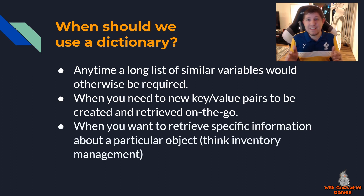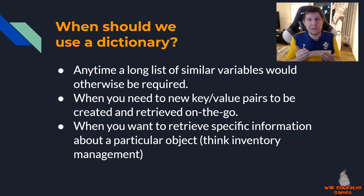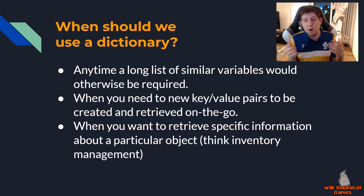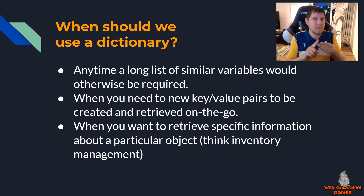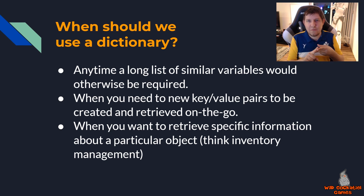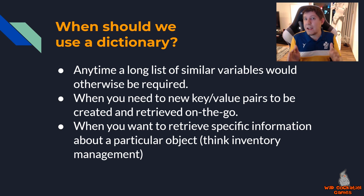Finally, dictionaries are great when you want to retrieve specific information about a particular object - you give it a key and retrieve that value. Think about an RPG where you're creating a sword, a shield, a bow, or a spell, and each object has different stats: weapon damage, defense, magical power. All of these values can easily be handled and retrieved by a dictionary as needed, without taking any additional operating power from the user's device.